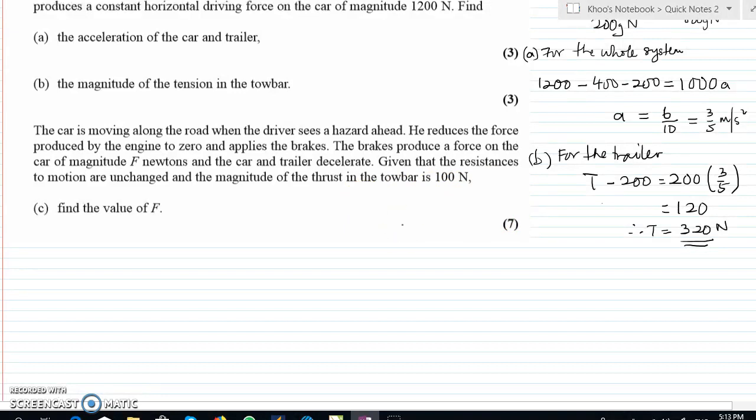Alright. For part C, what happens now is the car saw a hazard, so it reduces the force produced by the engine to zero and applies the brakes. So what happened now is you have the trailer, you still have the trailer here, this two-wheel trailer. You have the tow bar here, you still have the car.